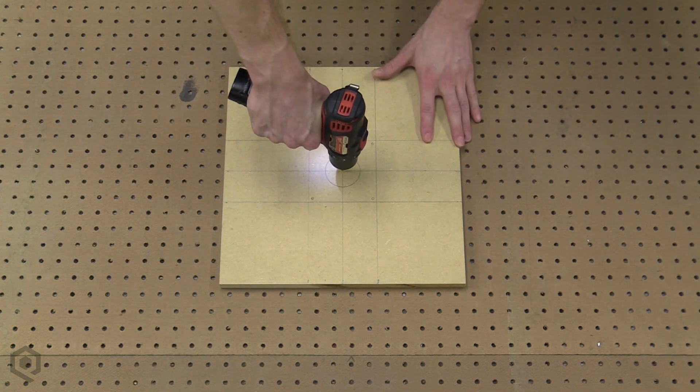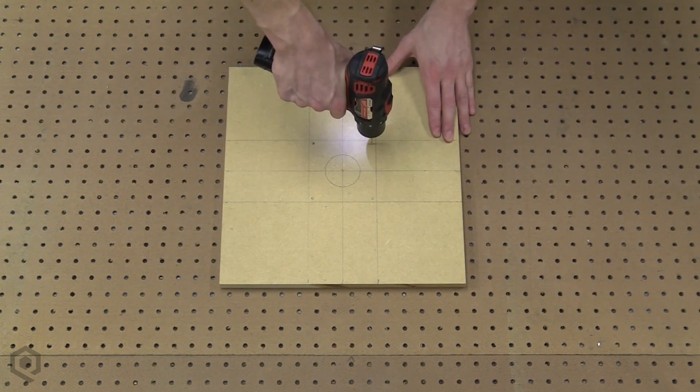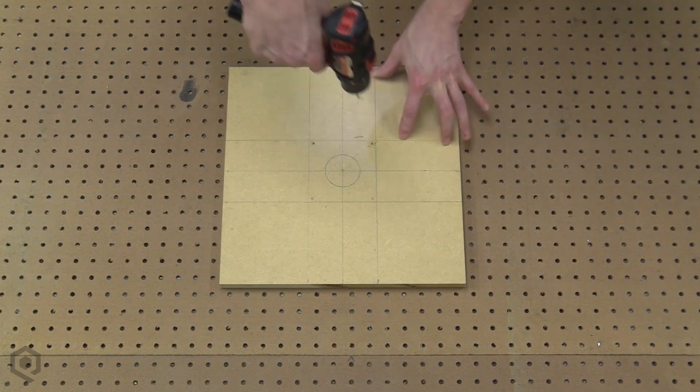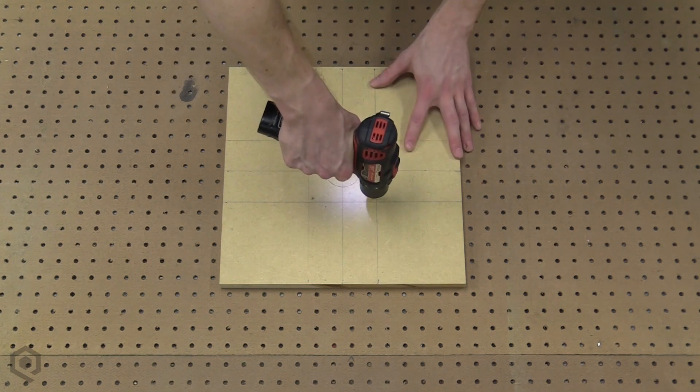Next, drill a hole where the center is marked. I just grabbed a bit that was about the size of the nail I picked out. If you're going to use a router instead of a jigsaw to cut out the circle later, make sure the hole is the right size for your router's pin. I went ahead and drilled pilot holes for my screws as well.